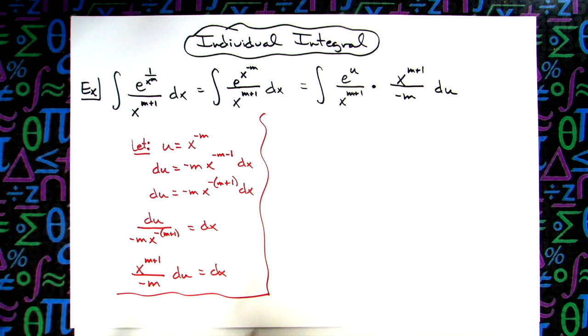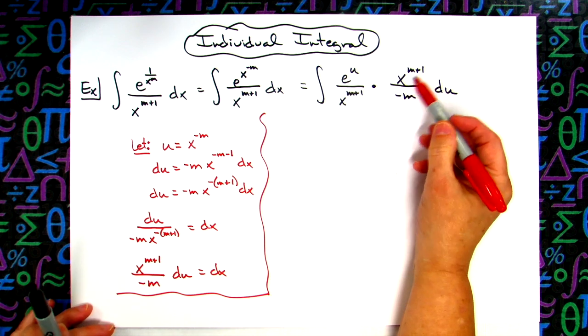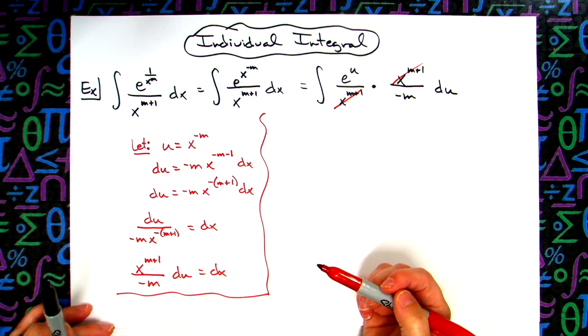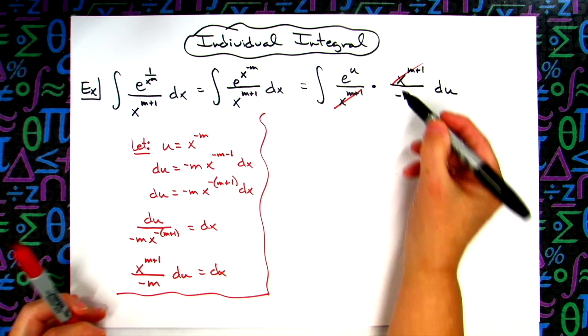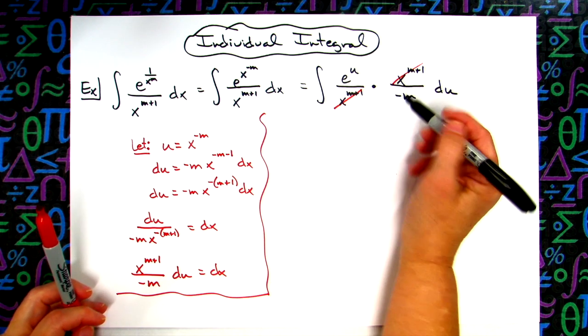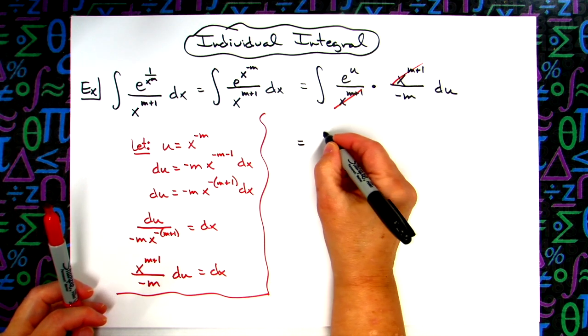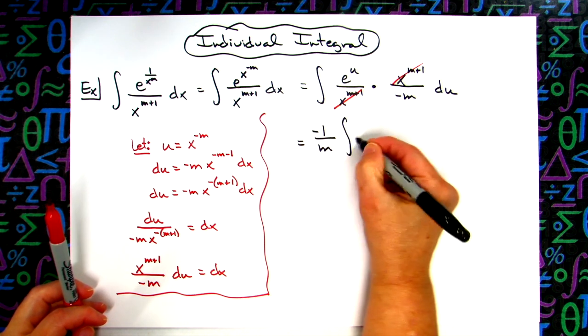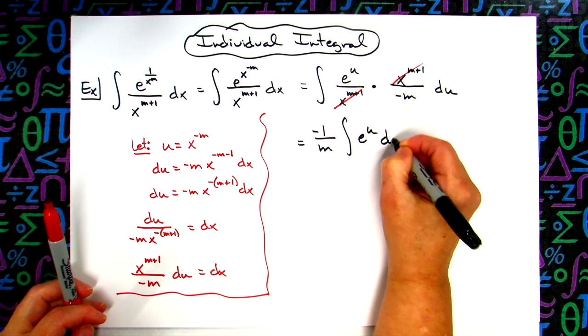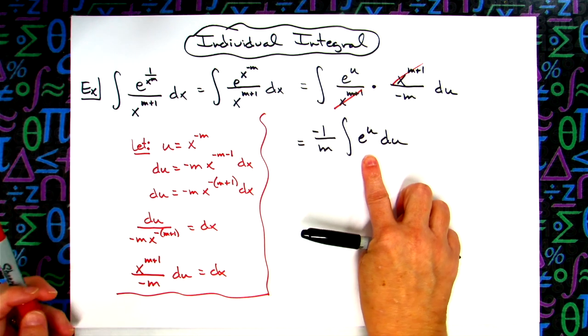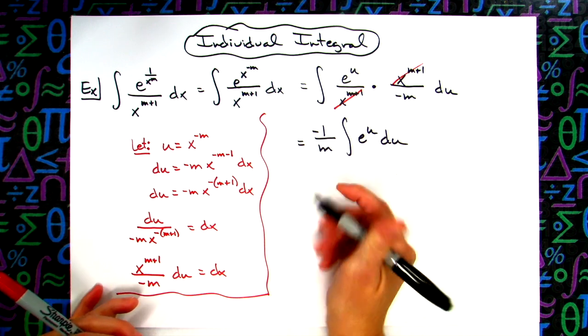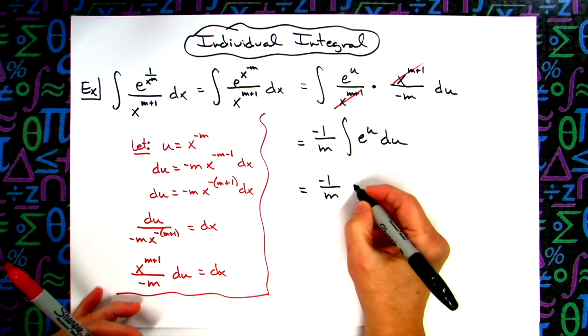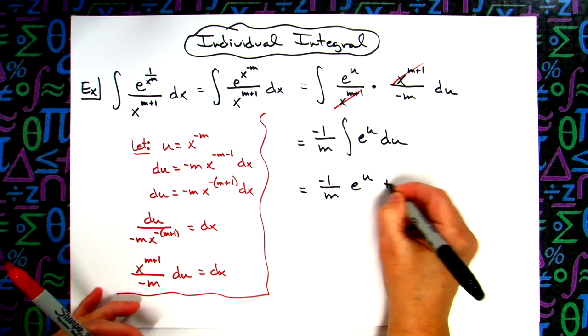Doing the algebra over here, set that rolling up nice so that the x raised to the m plus 1 would cancel out. Now this negative m in the bottom here, we need to factor that out in front. So we'll have negative 1 over m integral of e to the u du. Now we're down to an easy integration here. So we can integrate e to the u as e to the u. So negative 1 over m e to the u plus c.